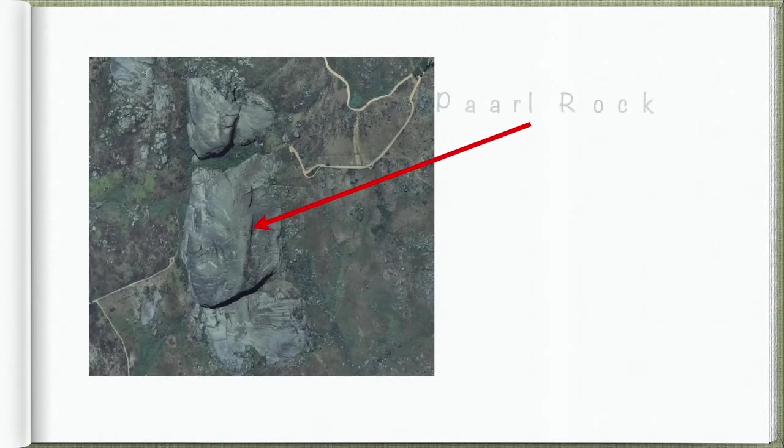Today, we're going to look at the formation of tors. Tors are a feature that is produced as a result of massive igneous intrusions. And when we think of massive igneous intrusions, the best example in South Africa is the Paarl Rock.